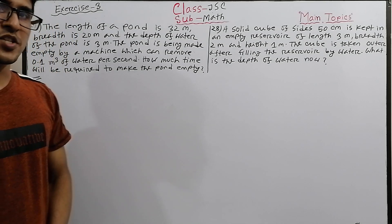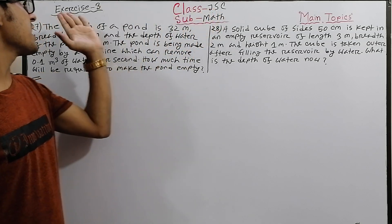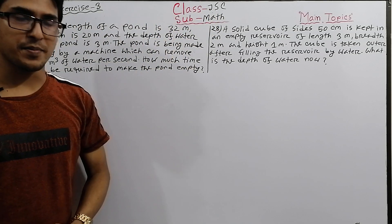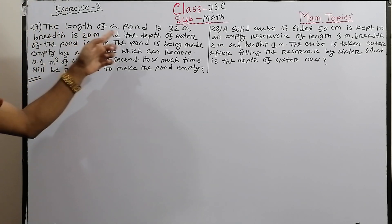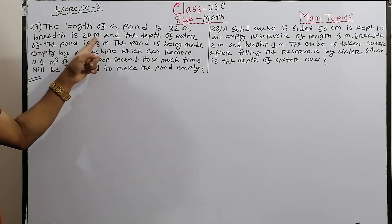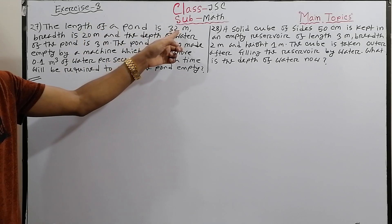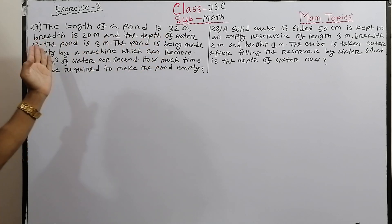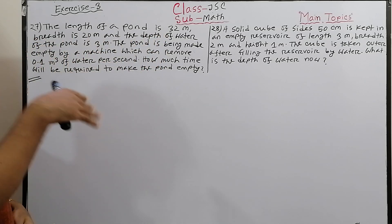Assalamu alaikum, welcome dear students. We will discuss JSC math arithmetic. Problem number 27: the length of a pond is 32 meters, the base is 20 meters, and the depth of the water is 3 meters. We need to find the depth.